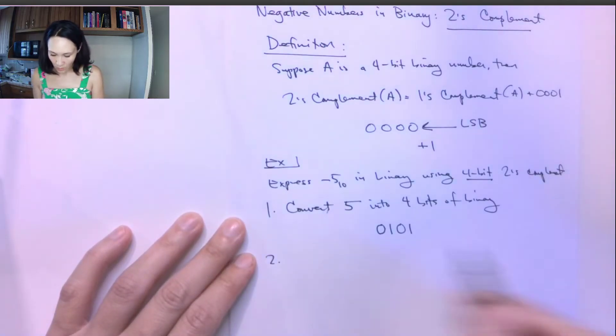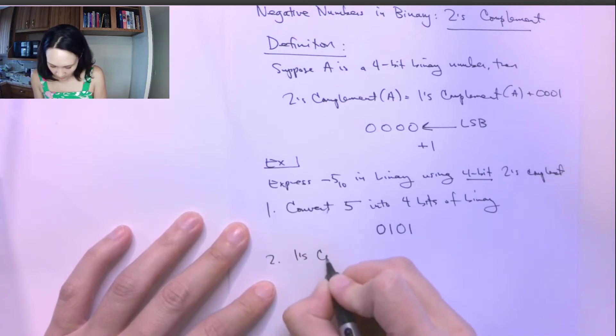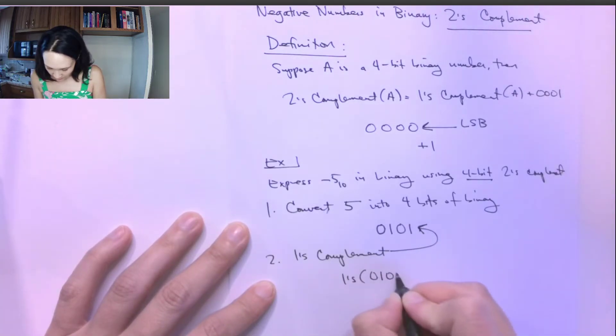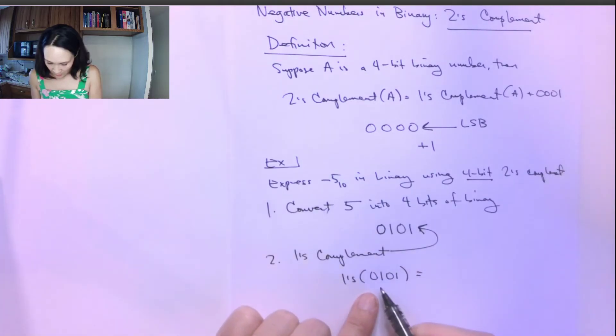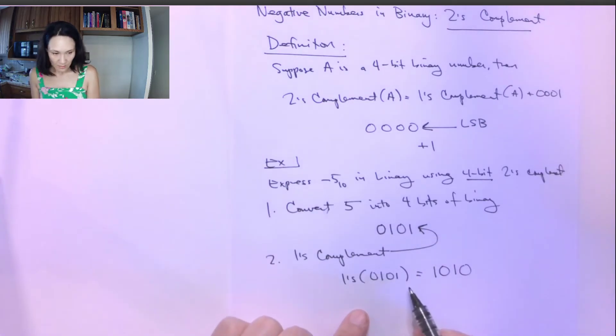We're going to take one's complement of this result here. One's complement of 0, 1, 0, 1 is just all of these bits flipped. So if we have a zero, this will turn into a one. If we have a one, this turns into a zero. That's a one. That's a zero. So one's complement of our result from step number one is 1, 0, 1, 0.